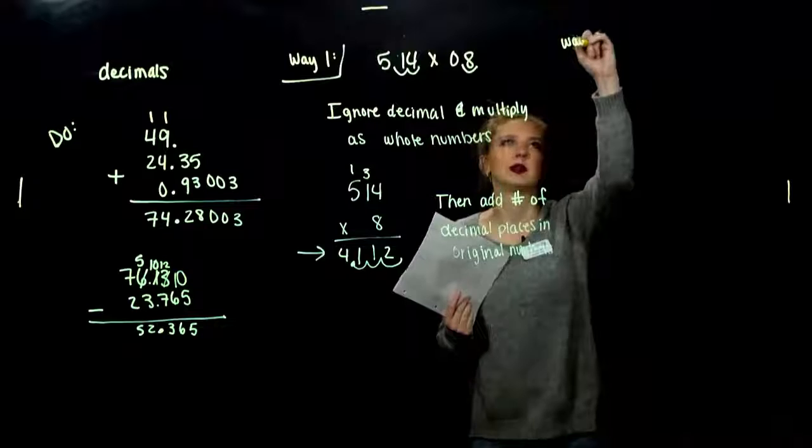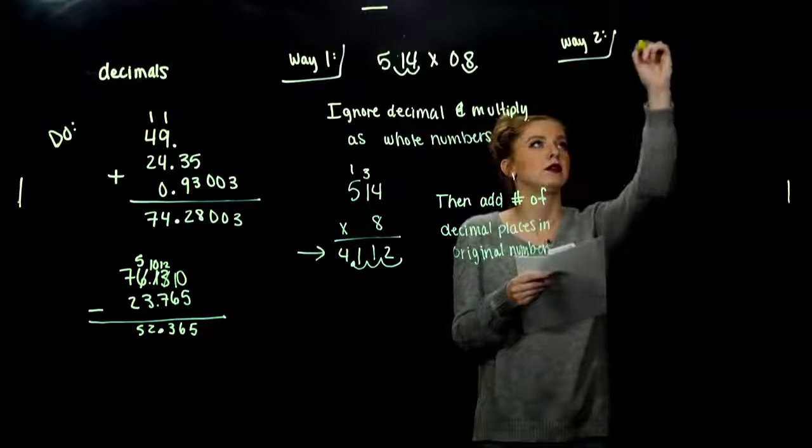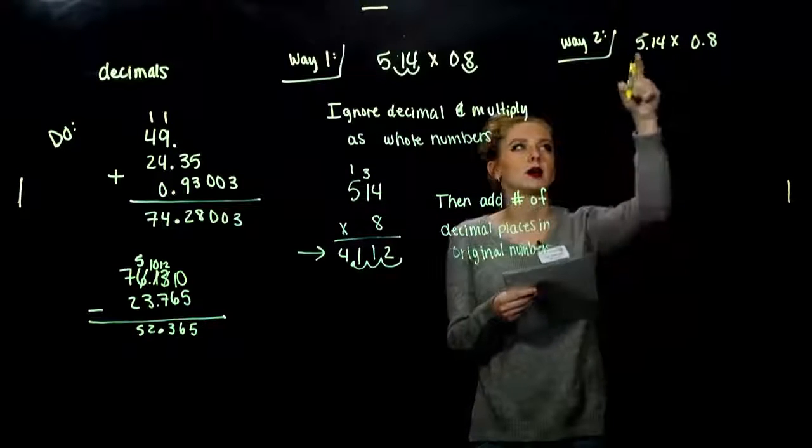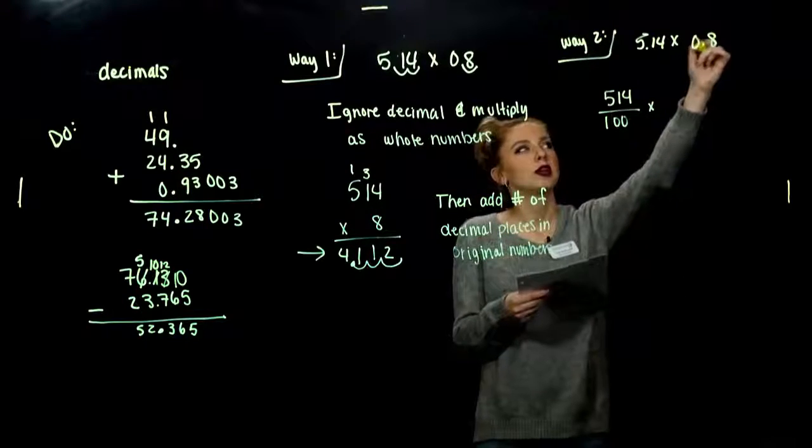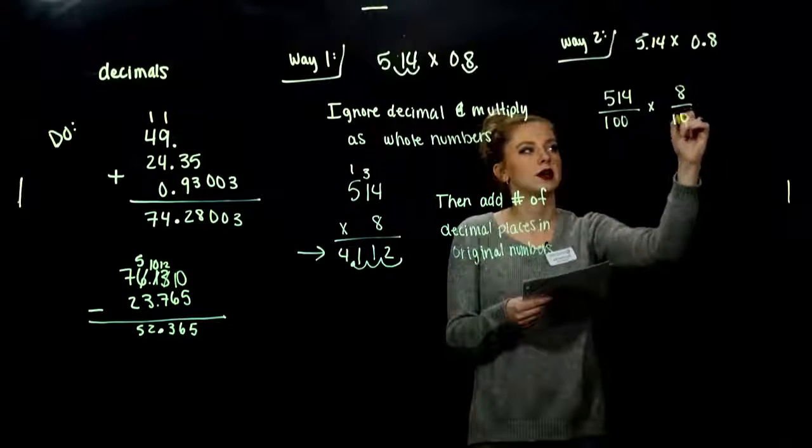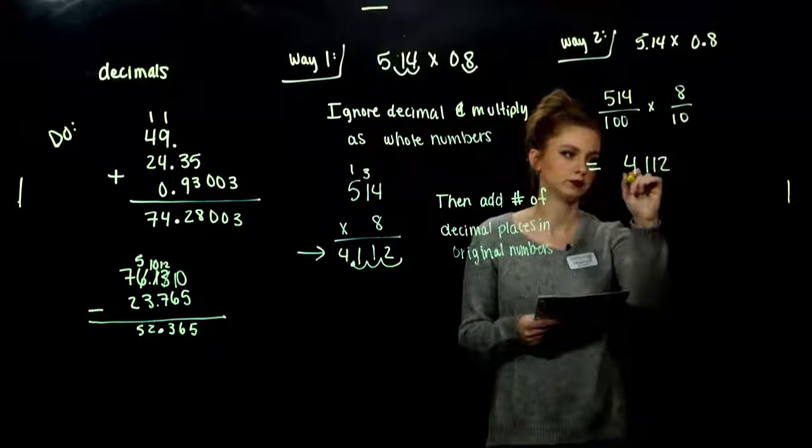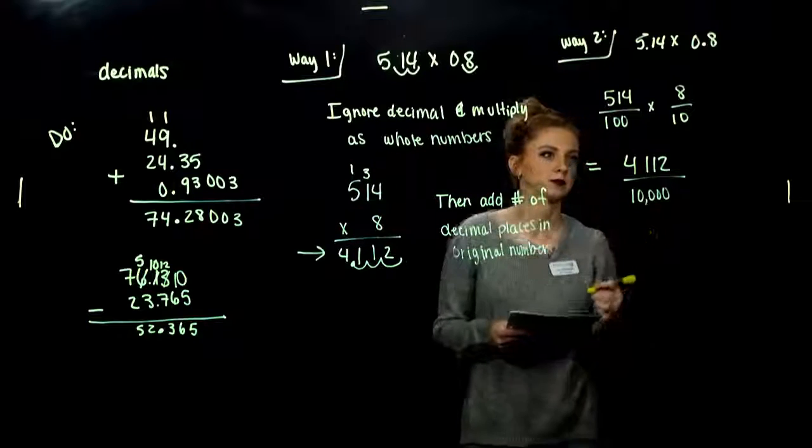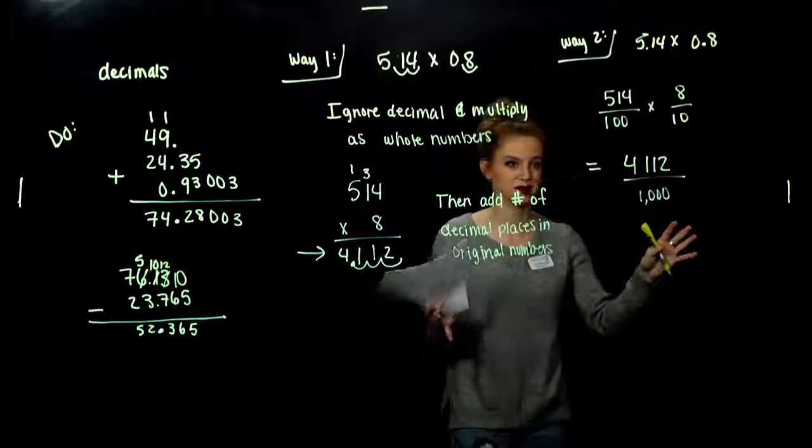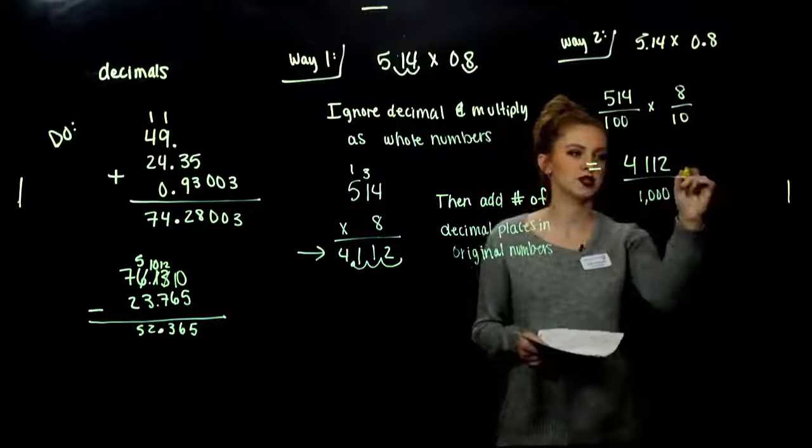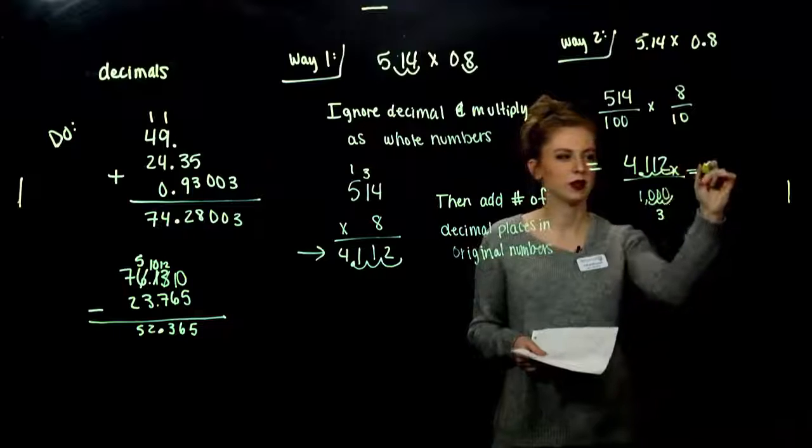Way 2 will also work. We convert each of these from decimal notation into fraction notation, multiply them together, then put the decimals back in. Just to show you, way 2, we'll take the same exact numbers. Converting 5.14 into fraction notation, 1, 2 decimal places, I'm looking at 514 divided by 100, times 0.8 as a fraction, 8 divided by 10. We can multiply straight across the top, straight across the bottom, and we get the same number, divided by 1,000. So to convert back into decimal notation, we've got 1, 2, 3 factors down here. I need to move my decimal point 1, 2, 3 factors in. So 4.112.